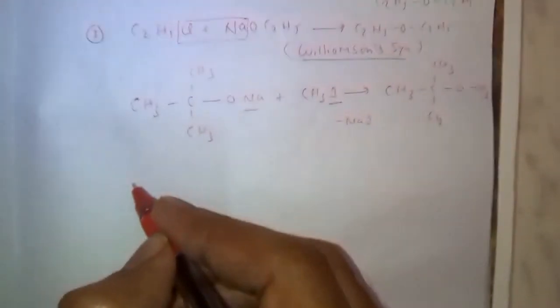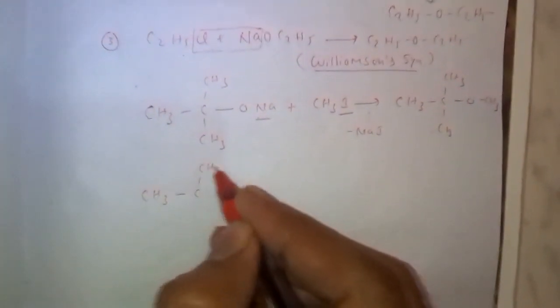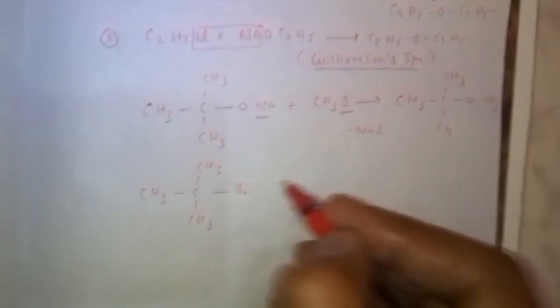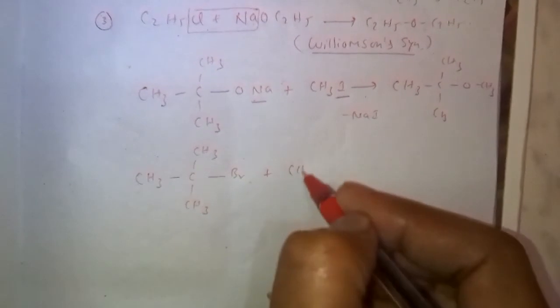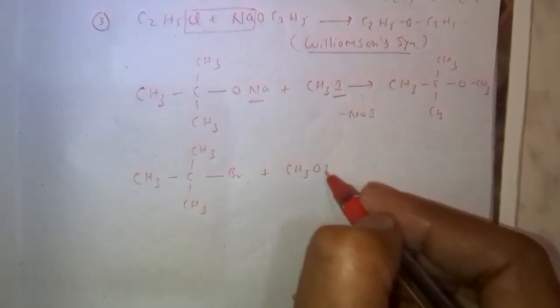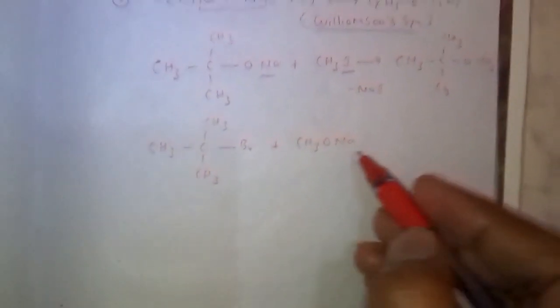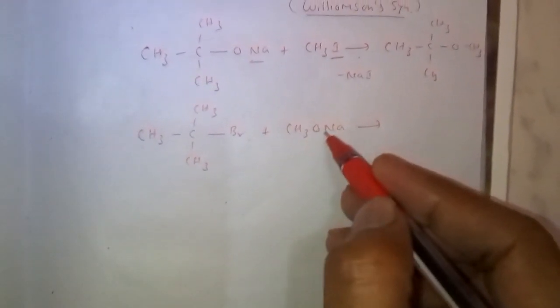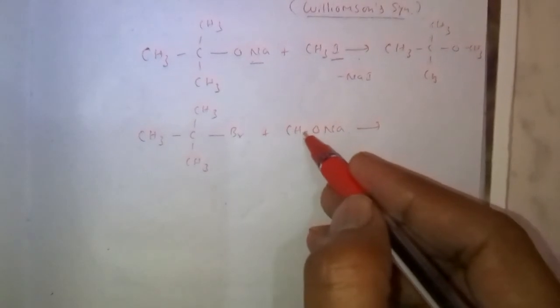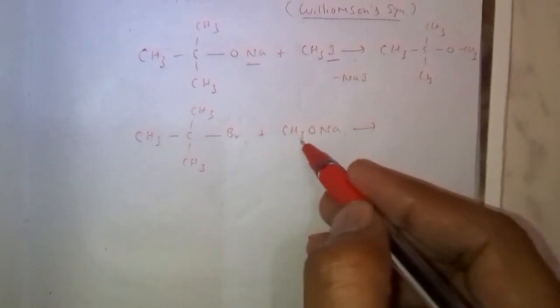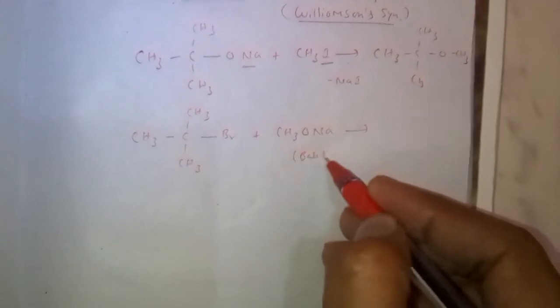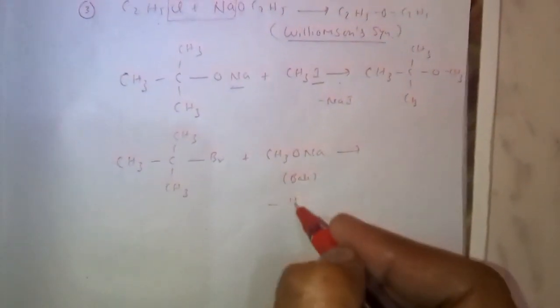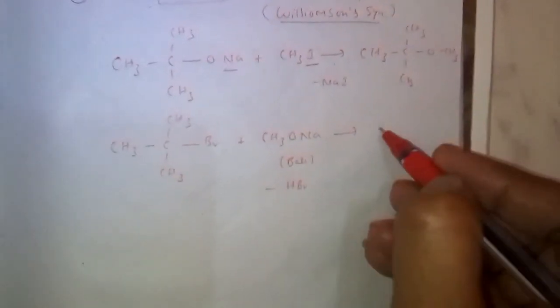If we take reverse, tertiary butyl bromide, this one is alkyl halide. It reacts with sodium methoxide CH3ONa. In case of this one, ether is not formed. Here, this one acts as a strong base. Here dehydrohalogenation takes place. HBr is removed. Minus HBr, it converts to alkene.